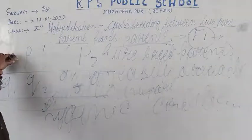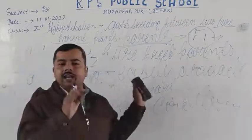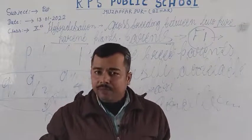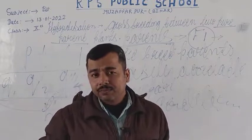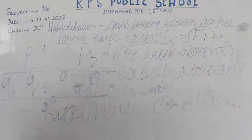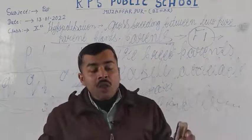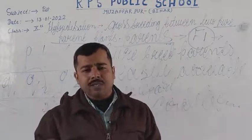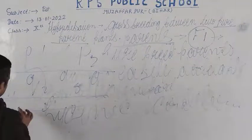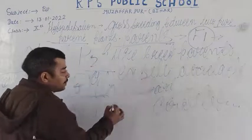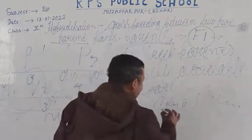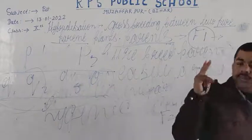यानि जिस भी parent का character dominant होगा, उस character को represent करने के लिए जो letter लेंगे, वो letter capital letter में represent होगा। अब F1 generation के offspring को फिर आगे breeding process के लिए adopt किया जाएगा, और उन दोनों की breeding से जो नए offspring produce होंगे, वो F2 generation कहलाते हैं।